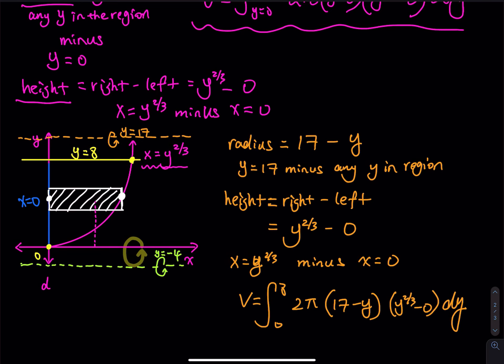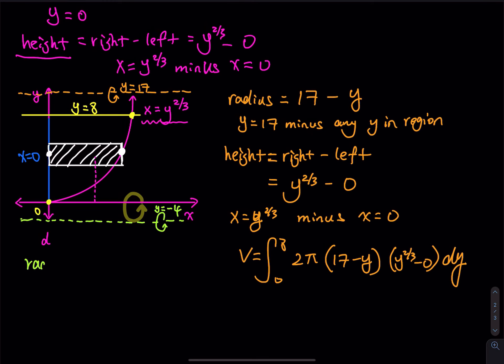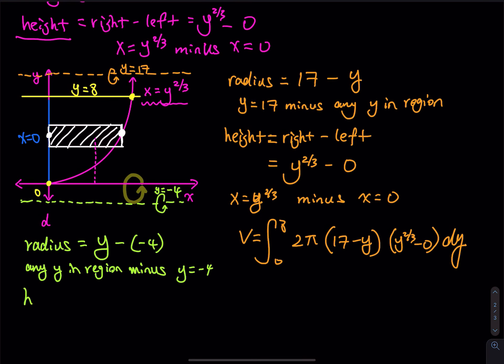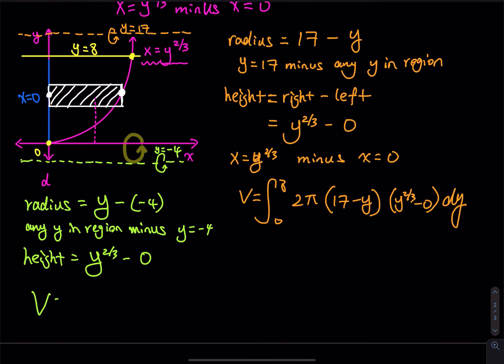How about the green one? Negative 4. So the radius, this time will be any y minus negative 4. So any y in the region minus y equals negative 4. And then the height is the right curve minus the left curve. So no change, y^(2/3) minus 0. And then the volume equals integral from 0 to 8. And then you have 2π, and then y minus negative 4, and then times the height which is y to the 2/3 minus 0. And then dy.